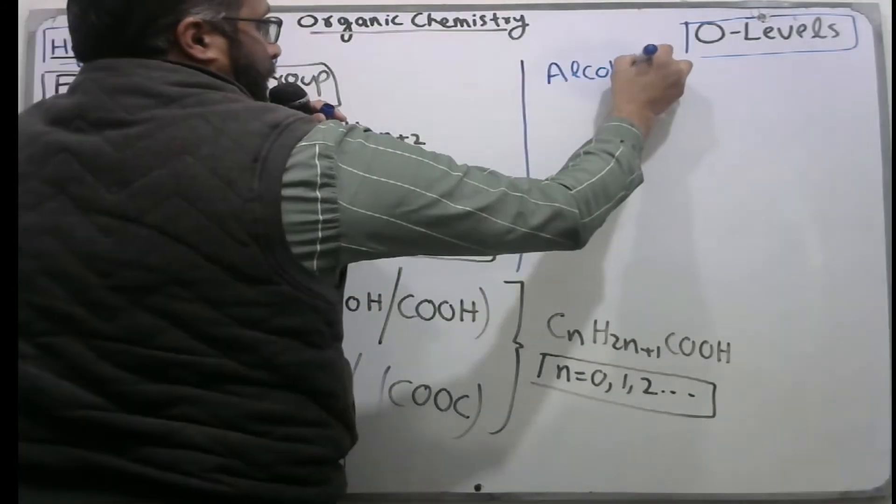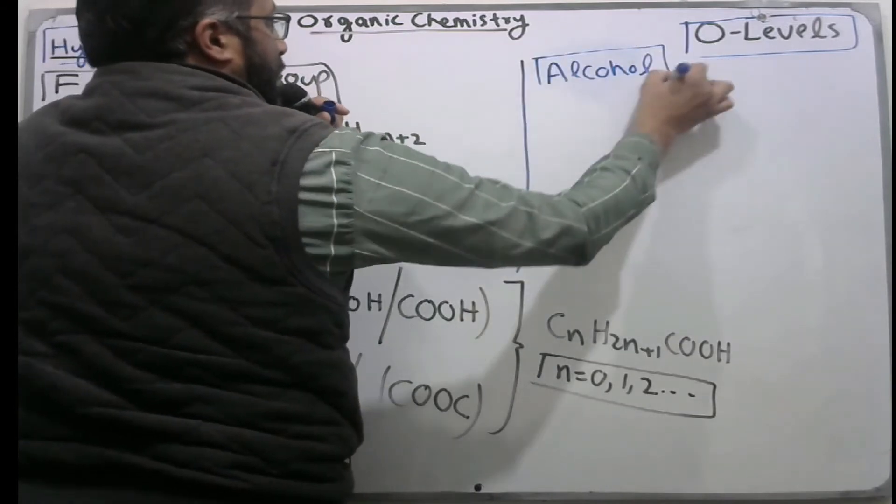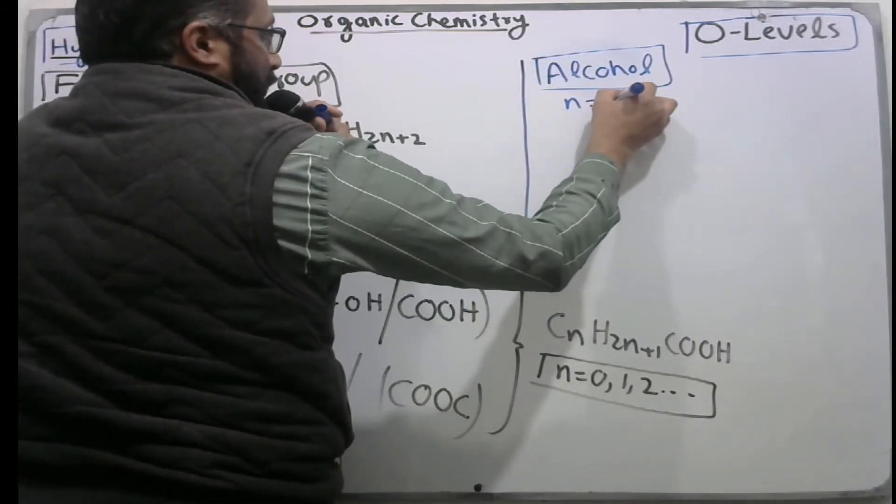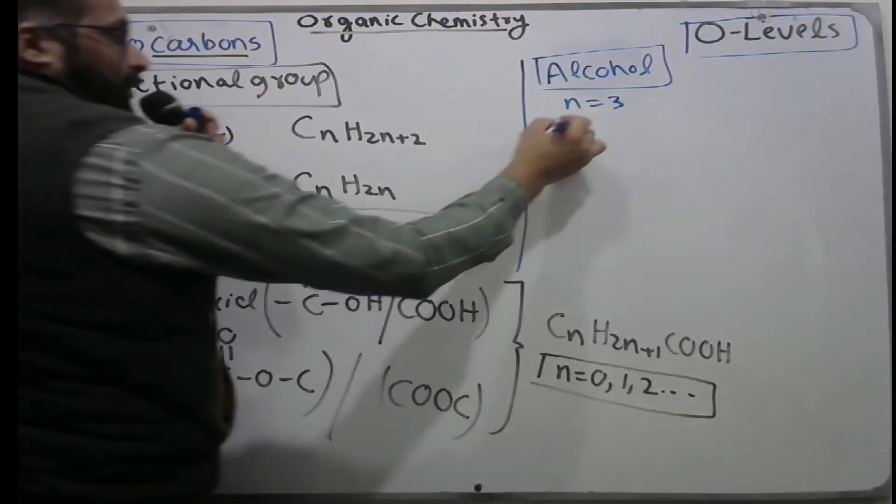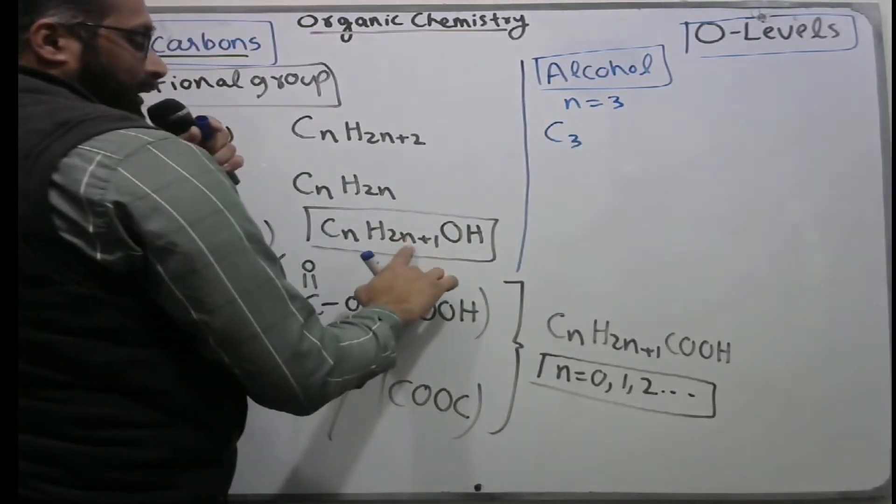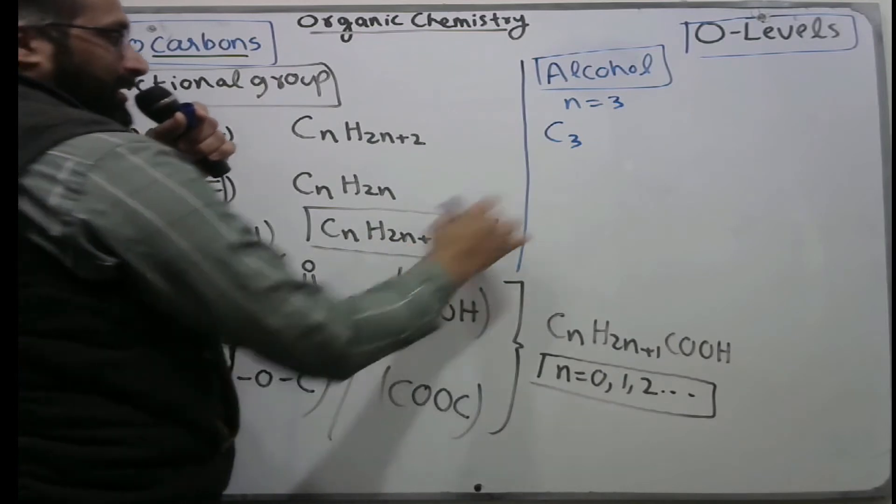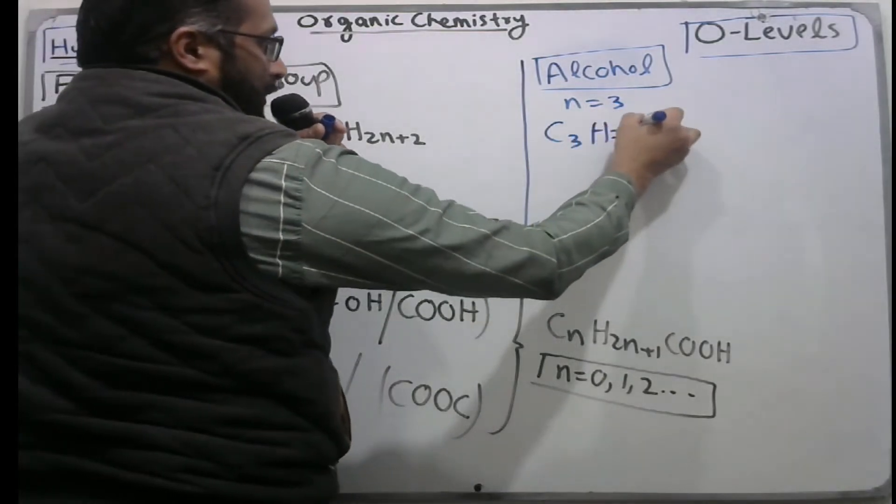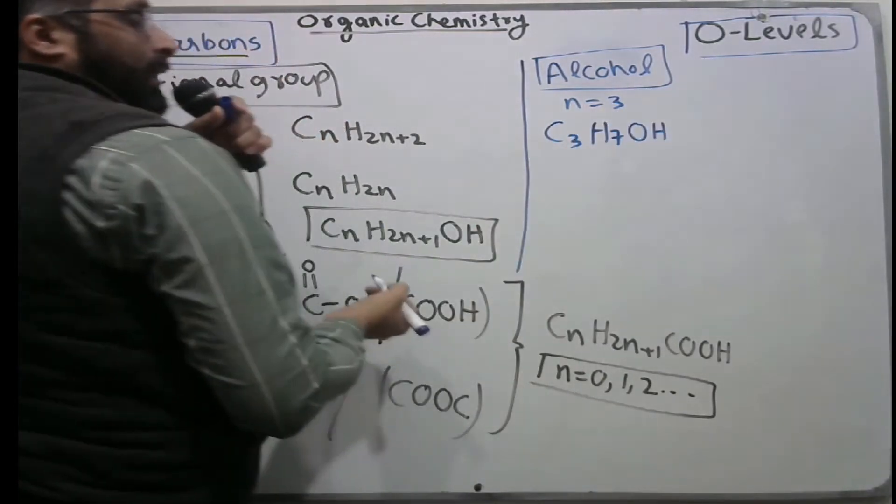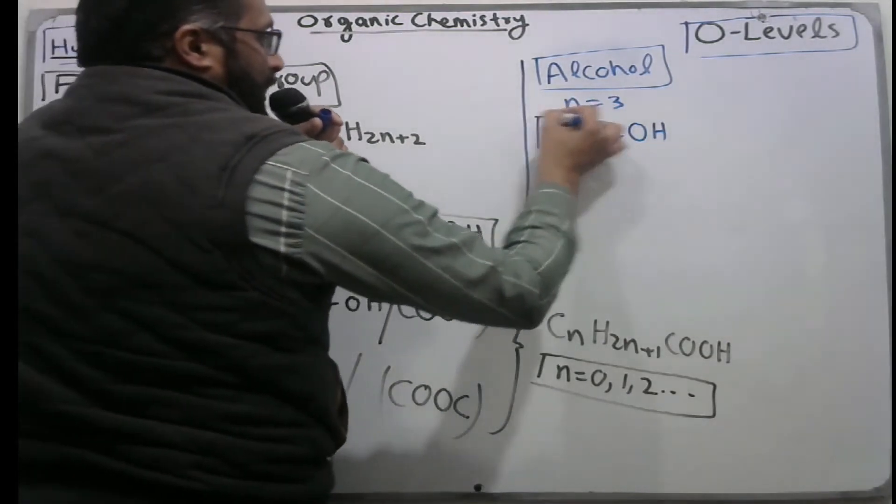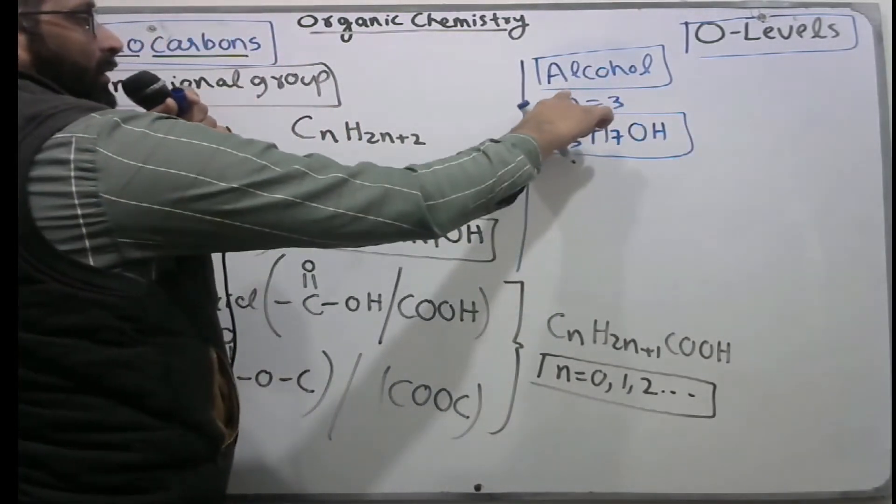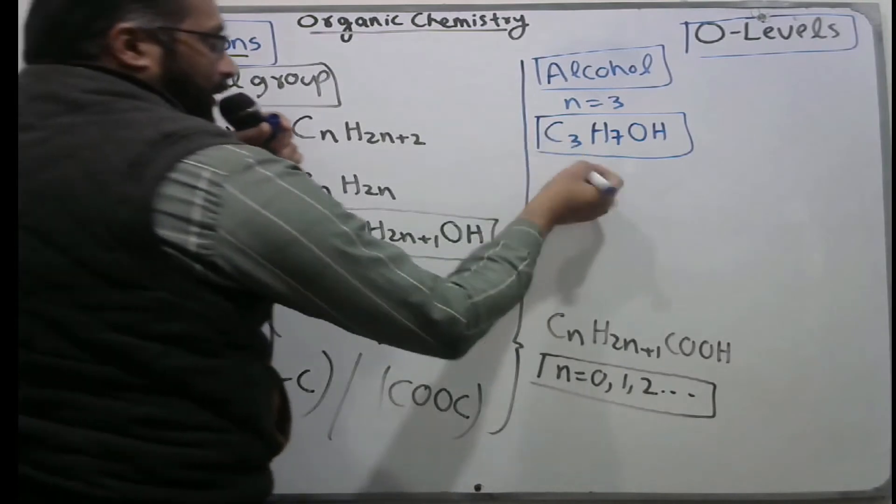Now we take some examples to make molecular formulas. For an alcohol with three carbons, put three here and you got C3. Put three here: two times three is six, plus one equals seven. So C3H7OH. You can make any number of carbons: one, two, three, just put and get the results.